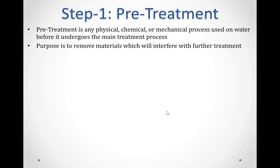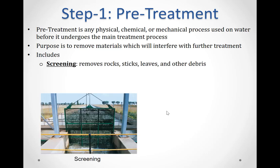The first step in the water treatment process is pretreatment. Pretreatment is any physical, chemical, or mechanical process used on water before it undergoes the main treatment process. First, water is taken from a source with the help of an intake pipe. The pretreatment step greatly varies from treatment plant to treatment plant. The purpose is to remove materials which will interfere with further treatment. This includes screening, aeration, and pre-disinfection.